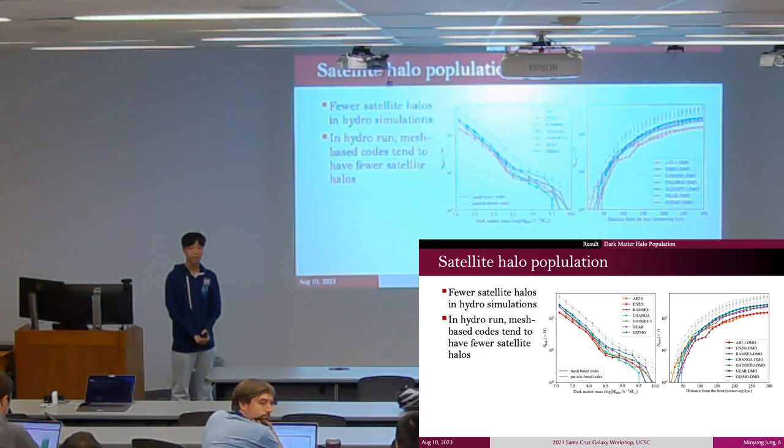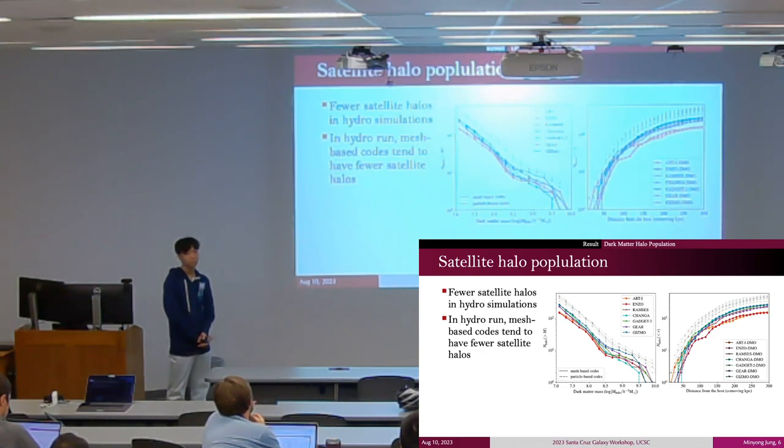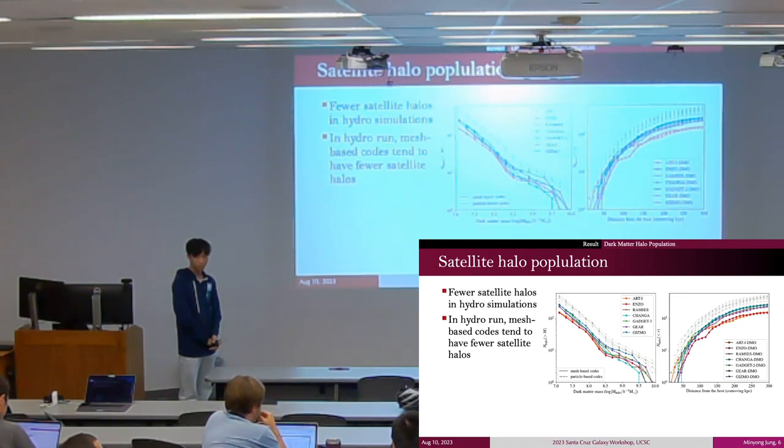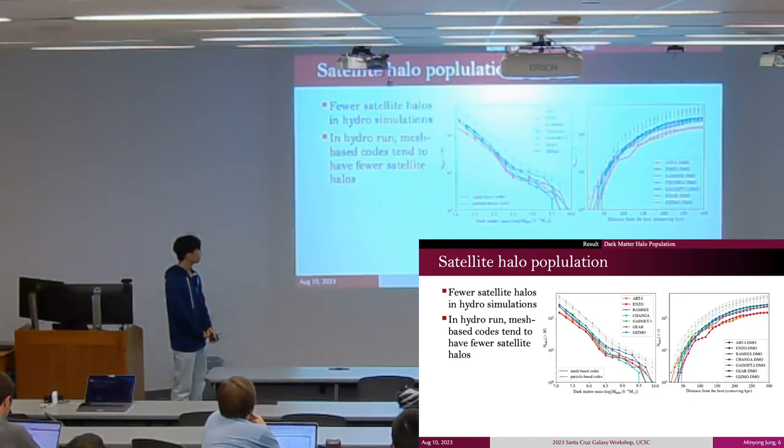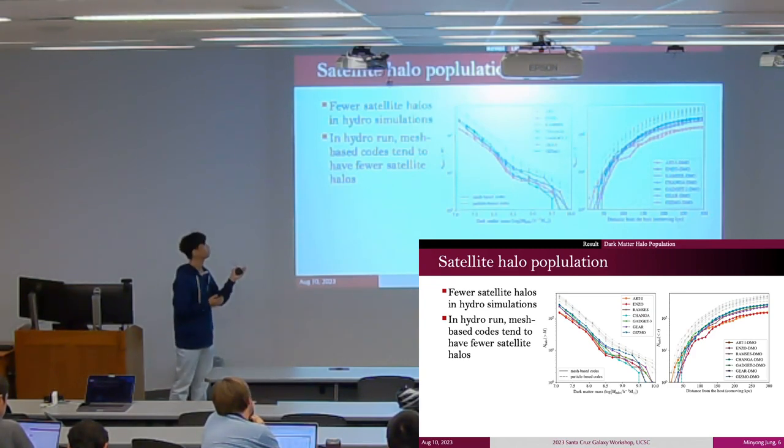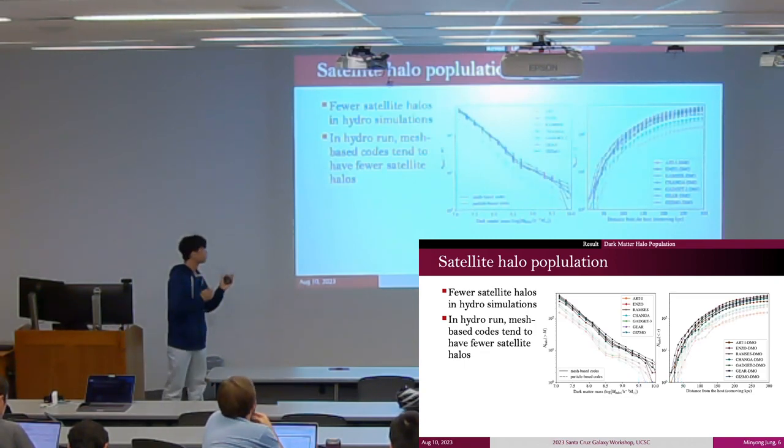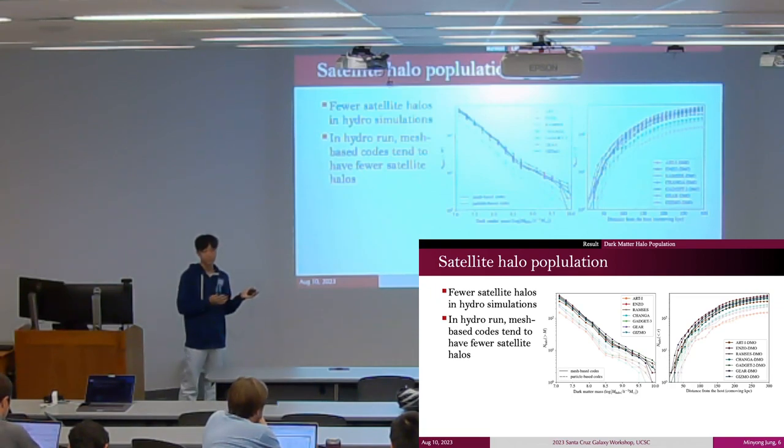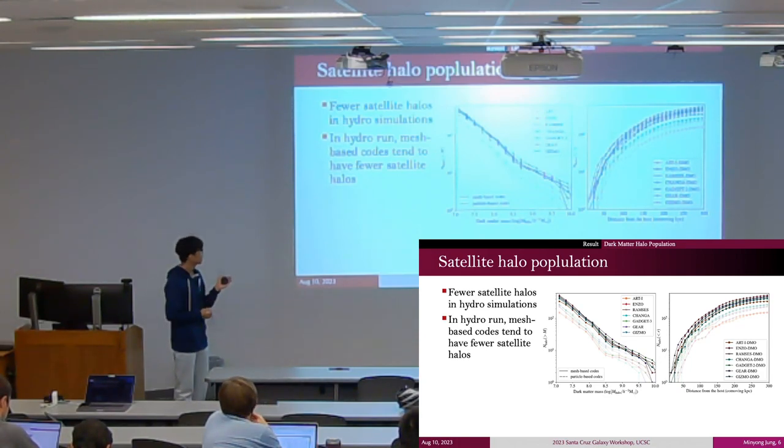In the DMO subhalo mass functions, there's a large dispersion between the different simulation methods. I was wondering if you could comment on where that is coming from, and in particular, how you're comparing the force softening scale in the grid-based codes to the particle-based codes. We think the DMO simulation shows quite good intercode agreement. There are some timing discrepancy issues in all these codes, so these seven codes are at different redshifts, and that might affect the population of satellite halos.